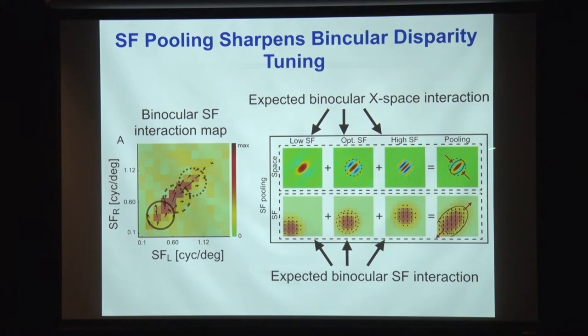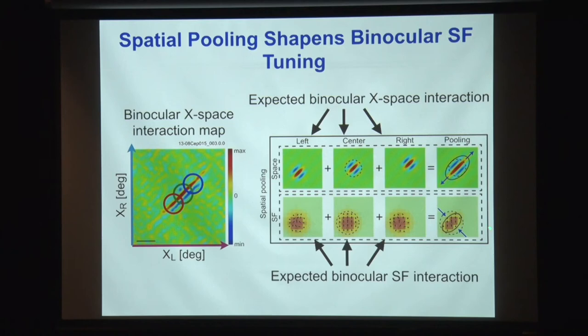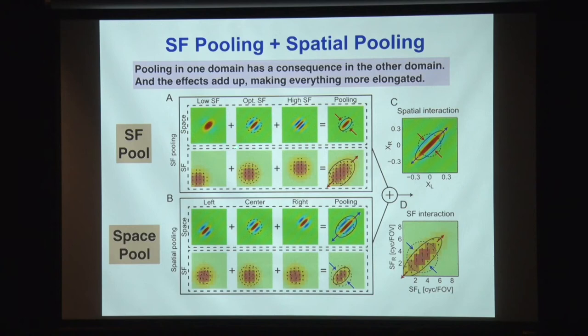It's sort of tightening the opposite domain related by Fourier transform. The opposite happens for spatial pooling — if you pool in space, extending from bottom left to top right using three subunits, the binocular receptive field is extended. But the consequence of this pooling in space is the tightening of the spatial frequency selectivity matching requirement in the frequency domain. So if you pool in space, you tighten the matching requirement in the frequency domain. These two effects actually add up if you combine them.